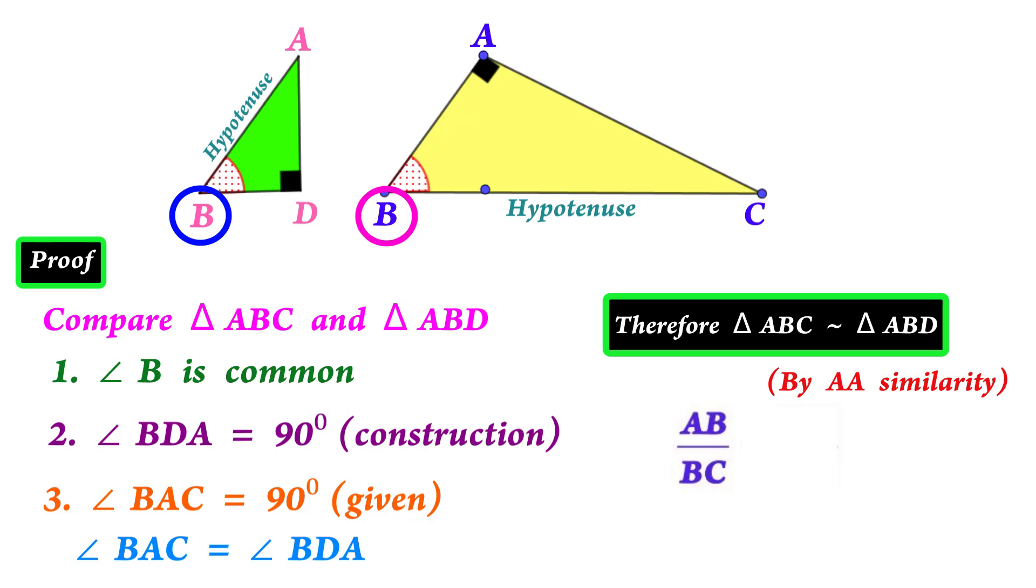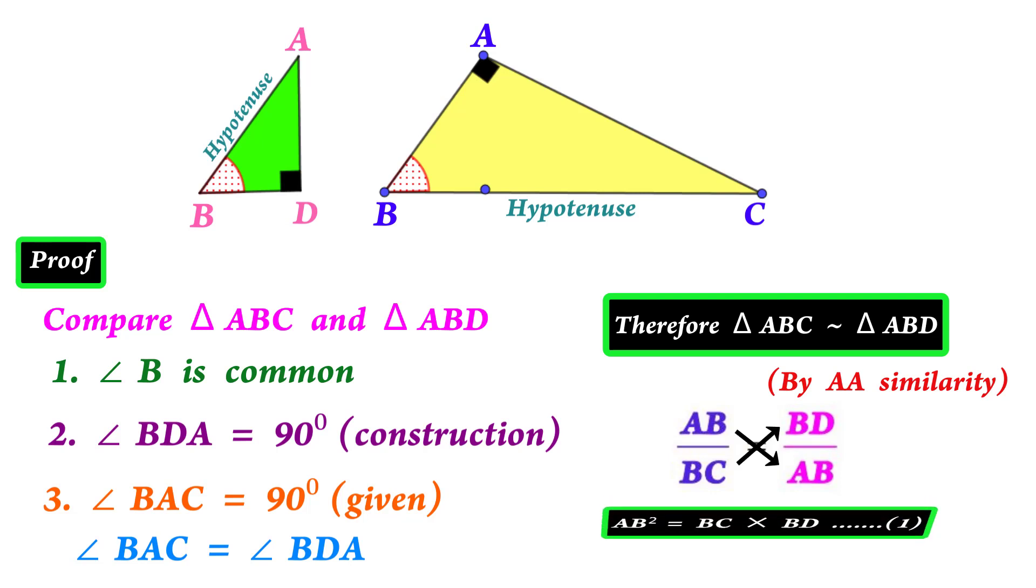In the second triangle, the corresponding side is AB. This is a proportion. Cross multiply to get AB² = BC × BD. This is our first equation.